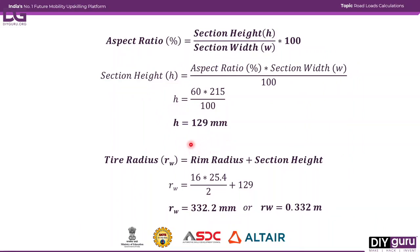To find the tire radius, we add the rim radius and the section height. The section height is 129 mm. The rim radius comes from the 16-inch rim diameter: 16 multiplied by 25.4 to convert inches to millimeters, then divided by 2 since 16 is a diameter not a radius. This gives a tire radius of 332.2 mm, or 0.332 meters. All calculations will use this value in meters.